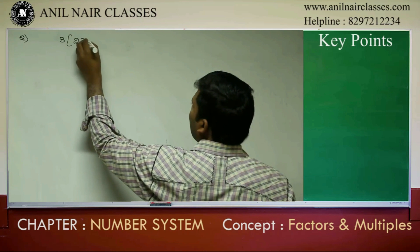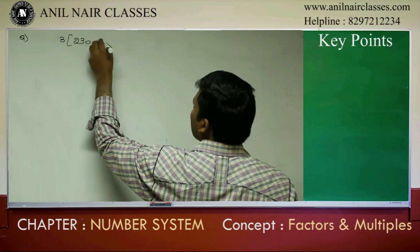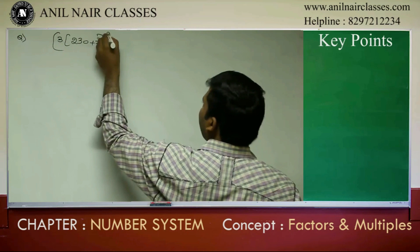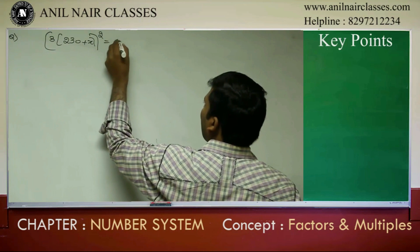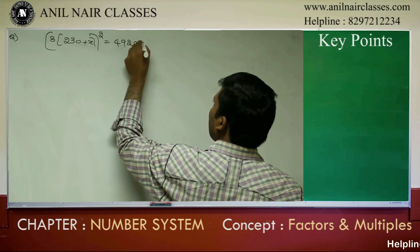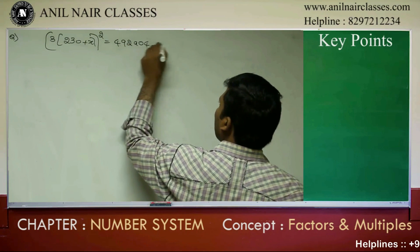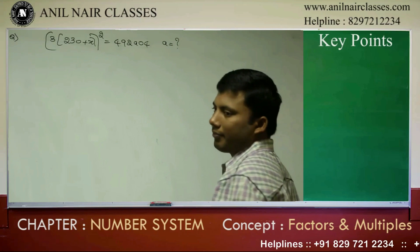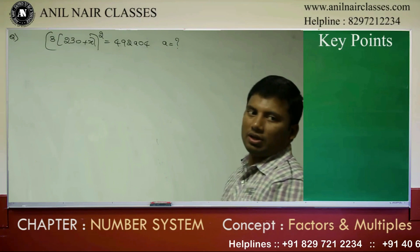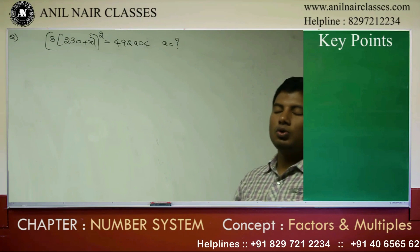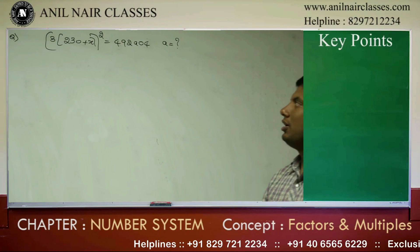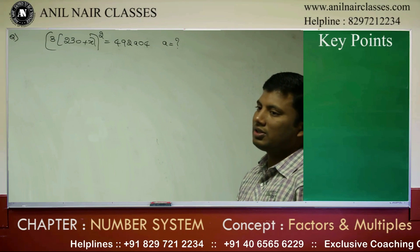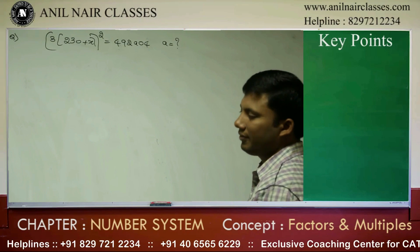Problem: 3 into (230 plus x) whole square equivalent to 492 is 0.4. Find the value of k. If I open the bracket, 9 times (230 plus x) whole square equals 492 is 0.4. Find the value of k.